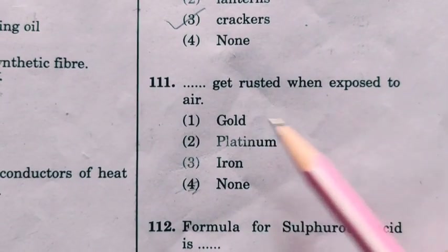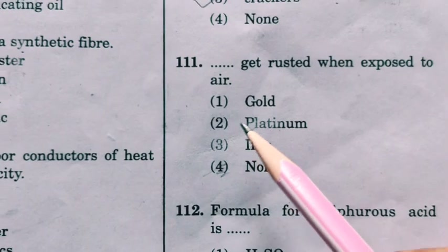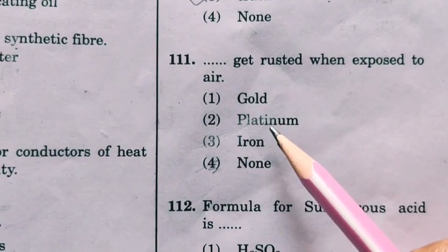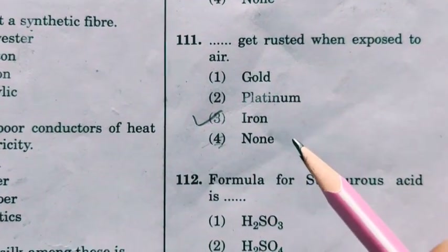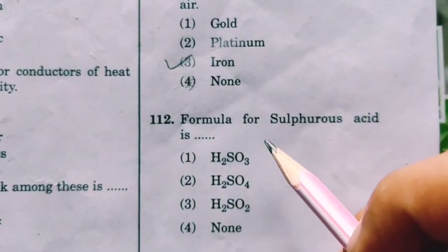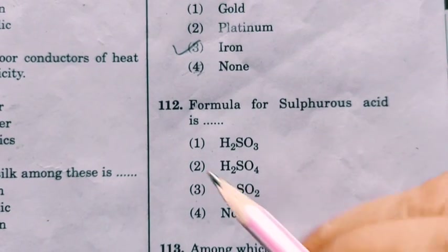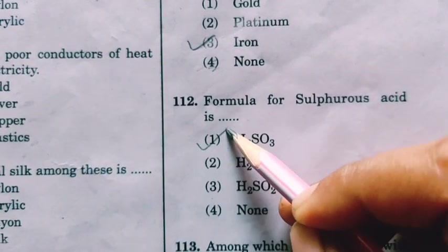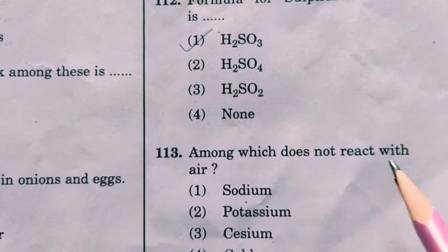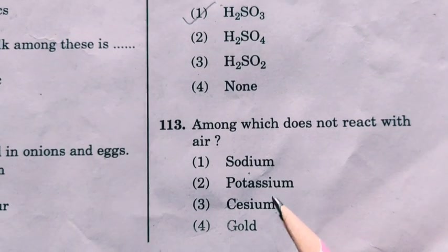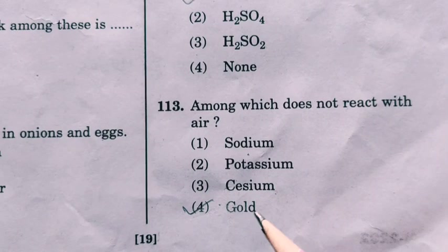Which metals get rusted when exposed to air? Gold and platinum do not get rusted; only iron gets rusted when exposed to air and water. The formula for sulfurous acid is H2SO3. Next: among the options, gold is a metal which does not react with air.